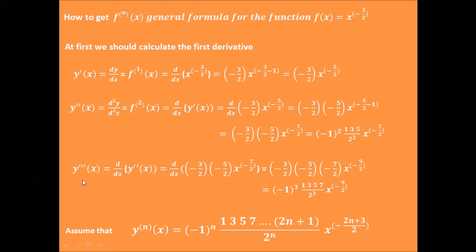For the third order derivative, which is the derivative on the second order derivative function, we differentiate minus 3/2 times minus 5/2 times x to the minus 7/2, which gives minus 3/2 times x to the exponent minus 9 divided by 2. This can be written as minus 1 cubed times 1 times 3 times 5 times 7 divided by 2 cubed times x to the minus 9 divided by 2.